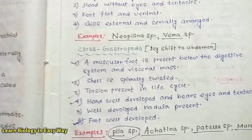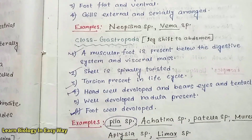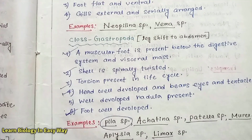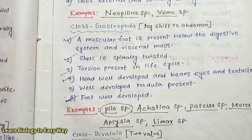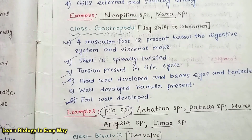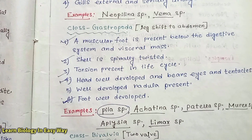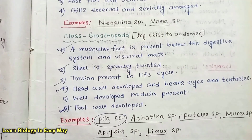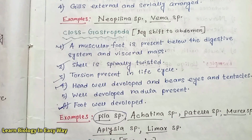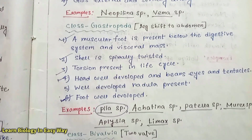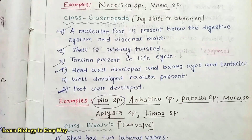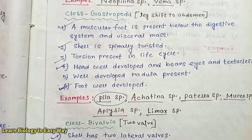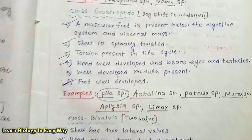Class Gastropoda: A muscular foot is present below the digestive system and visceral mass. Shell is spirally twisted. Torsion is present in the life cycle. Head is well developed and bears eyes and tentacles. Well developed radula is present. Foot is well developed. Examples: Pila sp., Achatina sp., Patella sp., Murex sp., Aplysia sp., Limax sp.